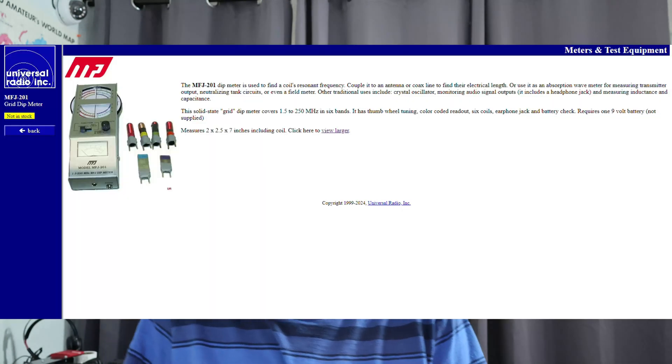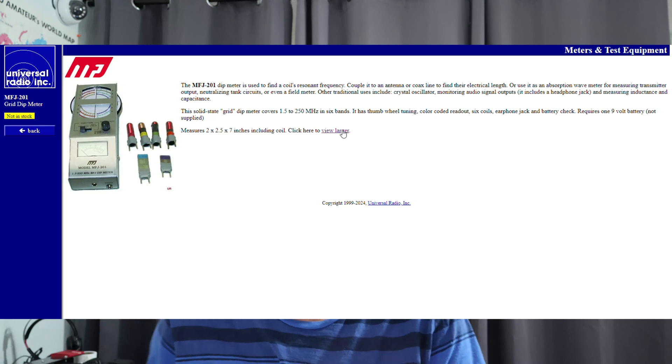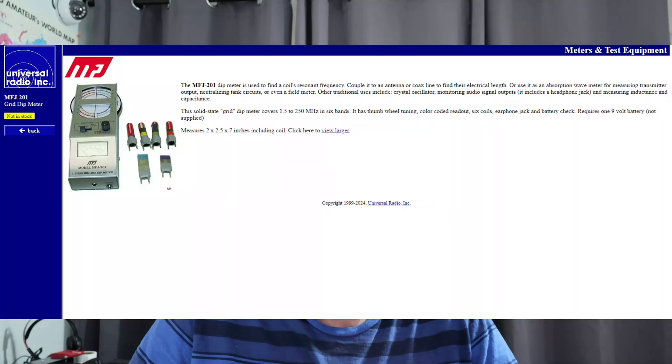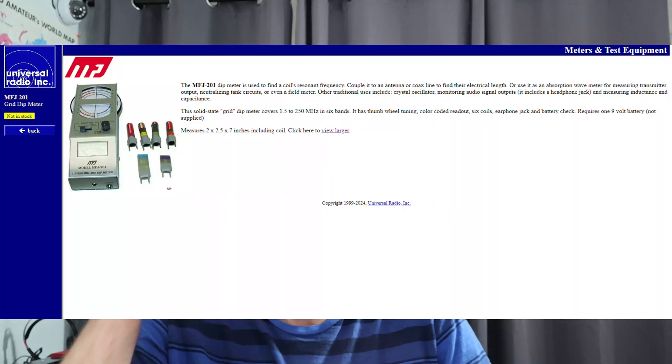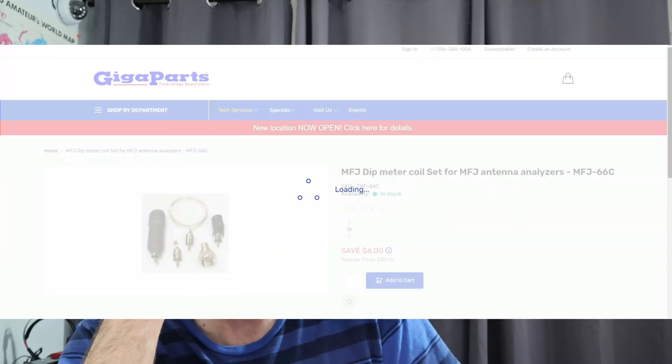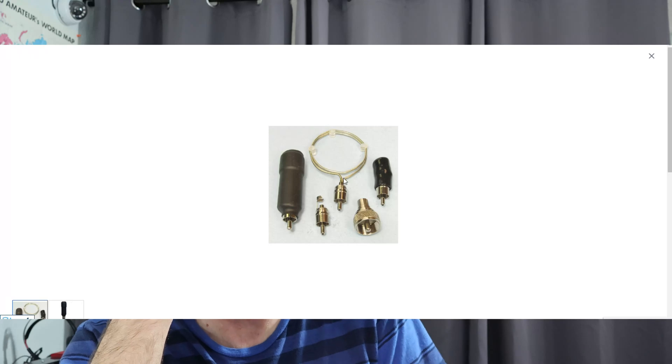A grid dip oscillator or grid dip meter is basically a device that sweeps a certain set of frequencies or outputs a certain set of frequencies that has to be adjustable. Sometimes it's manually adjustable, sometimes it's an automatic function. It'll sweep a certain range of frequencies. At a certain frequency you can place either a parallel LC circuit, so an inductor in parallel with a capacitor, or anything that's resonant at a certain frequency.